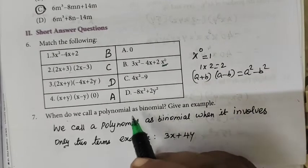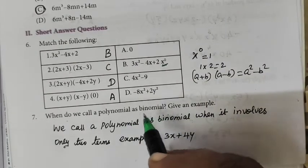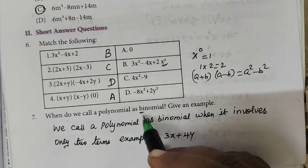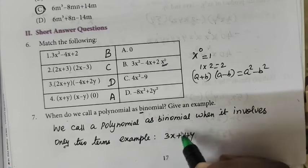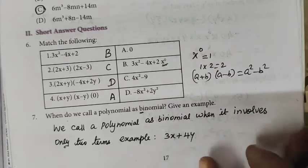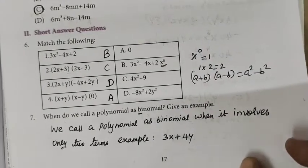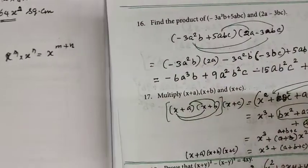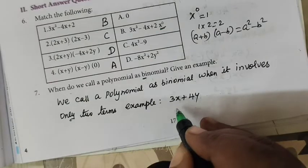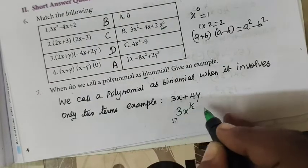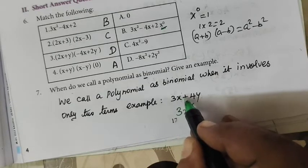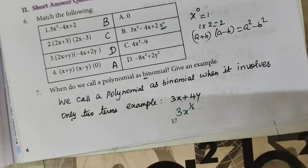When do we call a polynomial a binomial? A polynomial is called a binomial when it involves only 2 terms. For example, 3x plus 4 — we write two terms in a binomial. If we write the power in the binomial, we add it to the example of the polynomial.